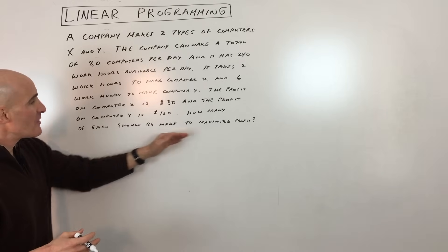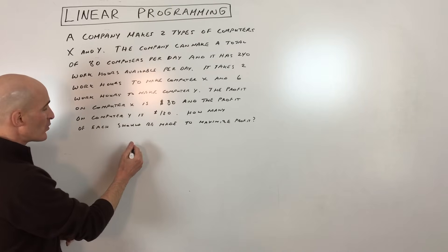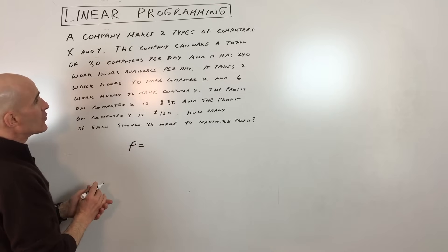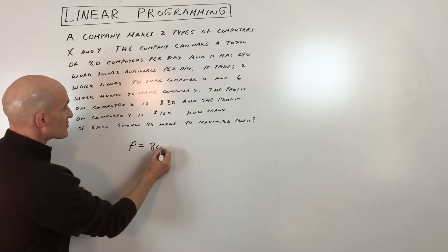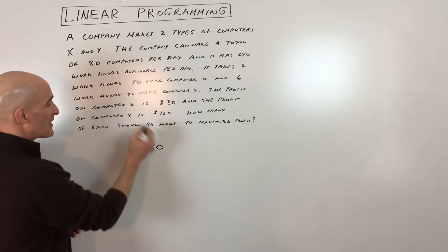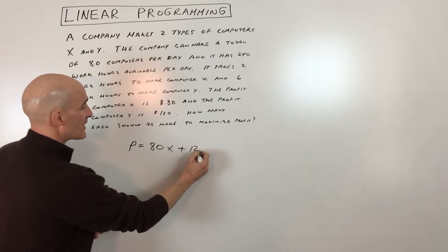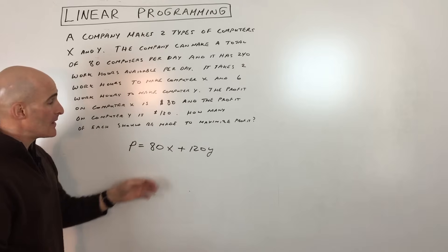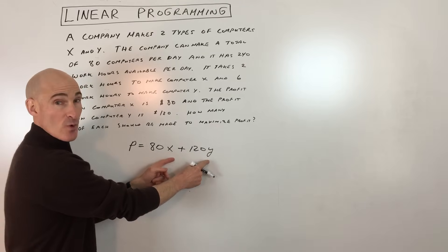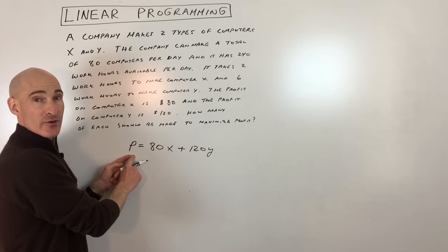How many of each should be made to maximize profit? The equation for profit is: profit equals $80 times the amount made of computer X, plus $120 times the amount made of computer Y. So if we figure out how many of X and Y type computers to make, that'll give us the profit.